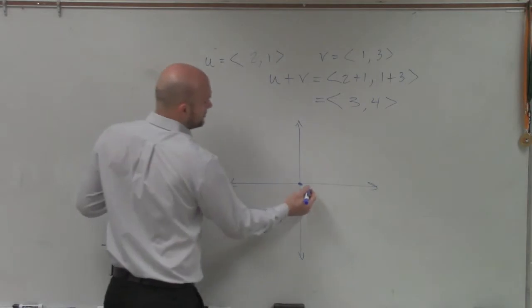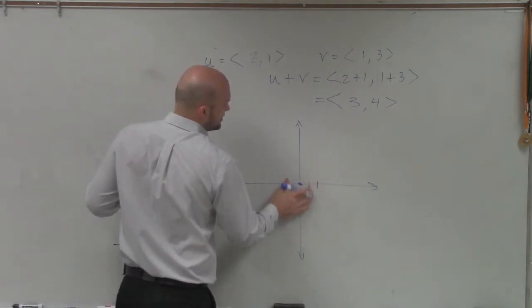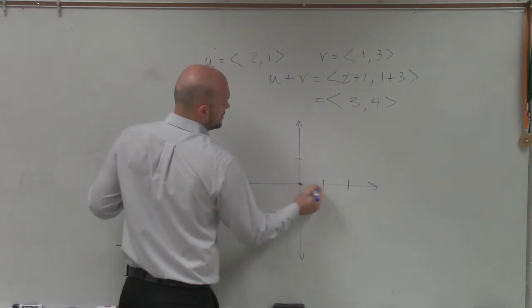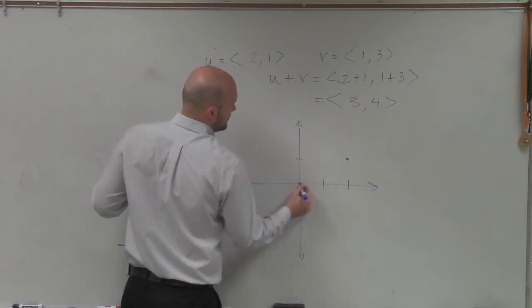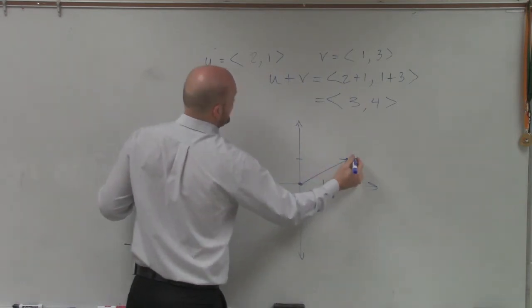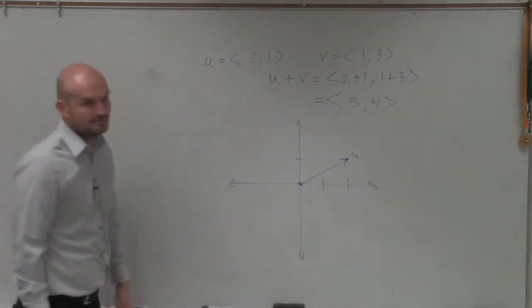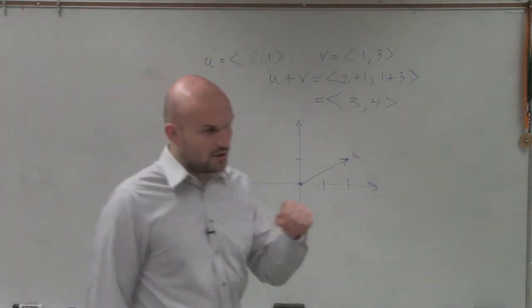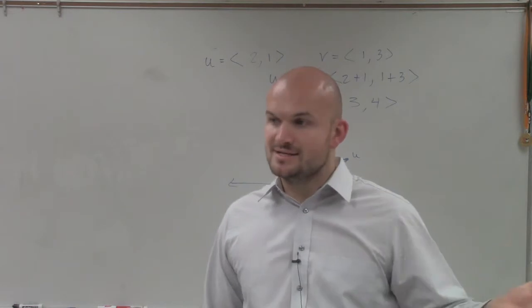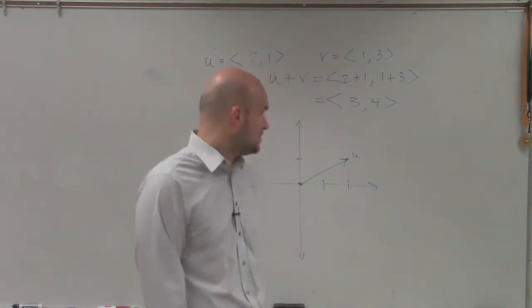So I have (2,1). Let's do this bigger since we - so I go over 2, 1. So that's what vector u looks like, right? It has an arrow with a point at the end. It's directed, and it has an initial and a terminal point.